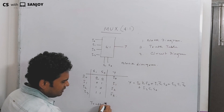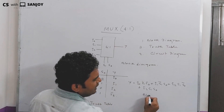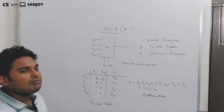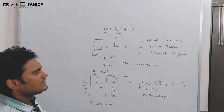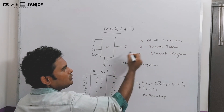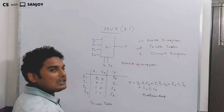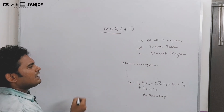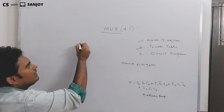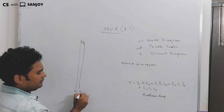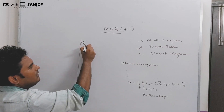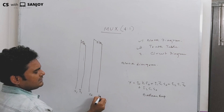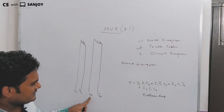This is the Boolean expression and this is the circuit diagram of the 4-to-1 MUX. Let's see how the circuit diagram is designed — it is very easy. We have select lines S1 and S0, and their complements S1 bar and S0 bar generated using inverters.